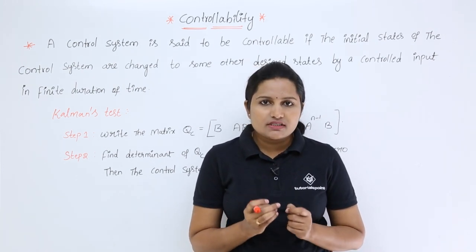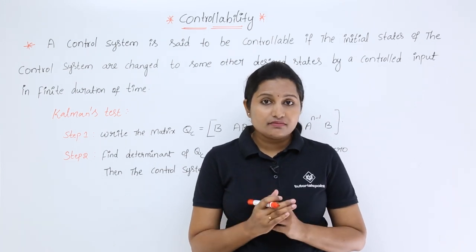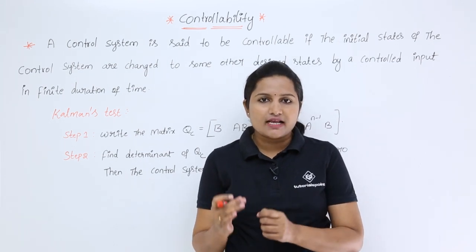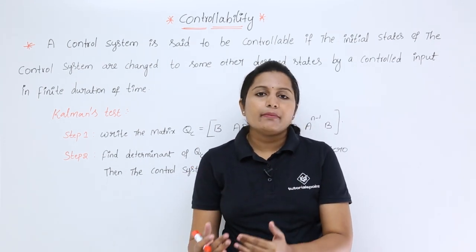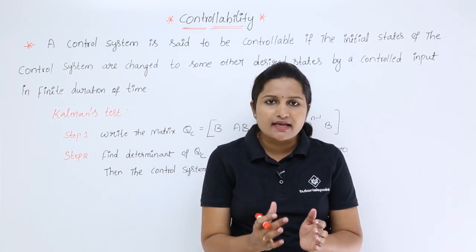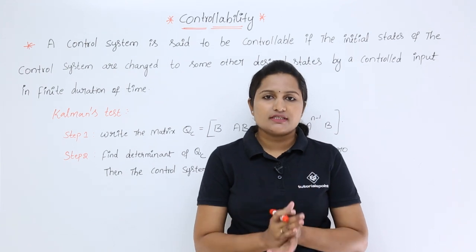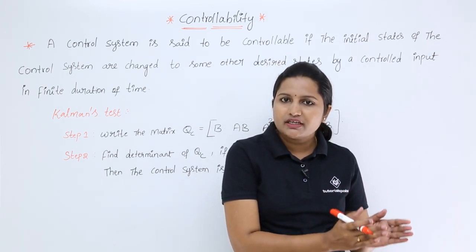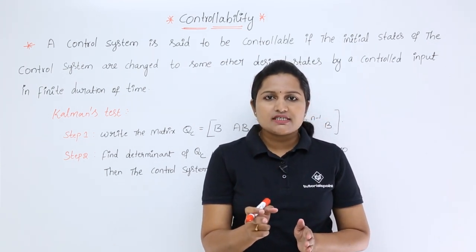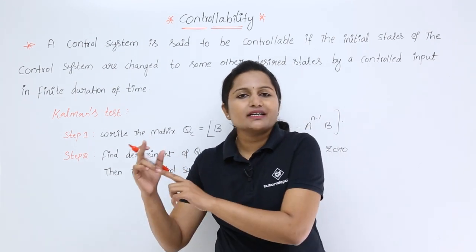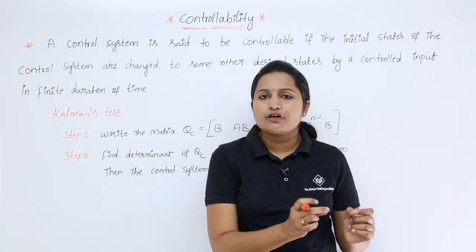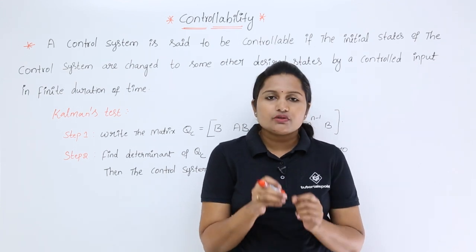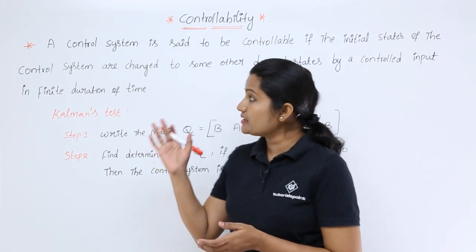A system is said to be controllable when its initial states are transferred to a desired state by the application of a controlled input within a particular time. If your control system is in your control — meaning you are able to change the initial state to your desired state by applying a controlled input — that is the controllability of a control system.